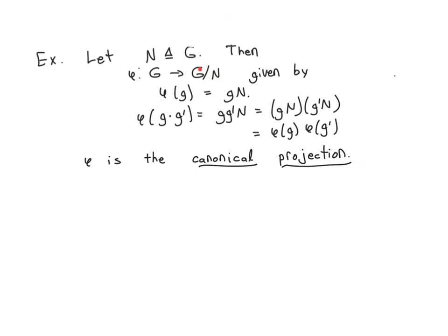Here is how you construct H: H is just the quotient group. Let N be a normal subgroup and take the quotient group G mod N. One choice of homomorphism is the canonical projection: phi goes from G to G mod N by taking a group element and sending it to its coset. This is a surjective homomorphism referred to as the canonical projection — a generalization of the notion of projection for vector spaces.